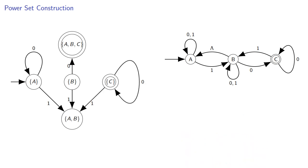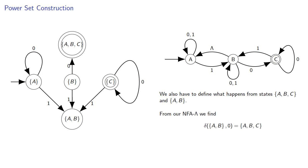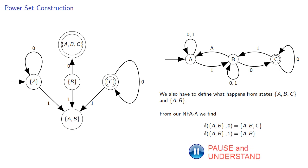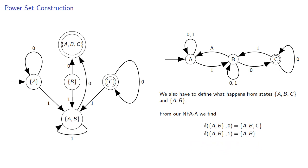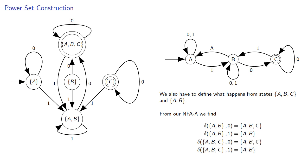Now we have a couple of new states to figure out. We have to define what happens from states {A, B, C} and {A, B}. From {A, B} with a 0, we go to one set, and from {A, B} with a 1, we go to another. From the state {A, B, C}, a 0 or 1 will take us to the appropriate sets. And now we have a finite automaton with no lambda transitions.